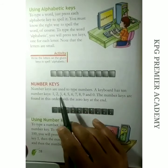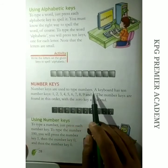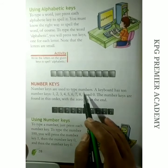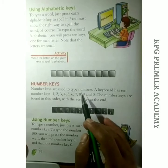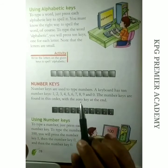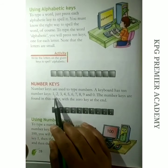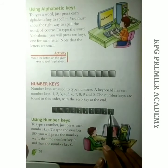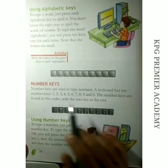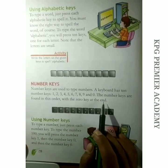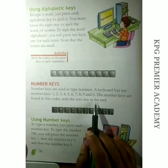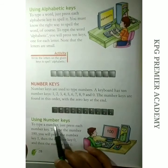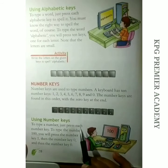Next are the number keys. The number keys are used to type numbers. A keyboard has 10 number keys: 1, 2, 3, 4, 5, 6, 7, 8, 9, and 0. You can see them in the picture. The number keys are found in this order with the 0 key at the end. To type a number, just press each number key.